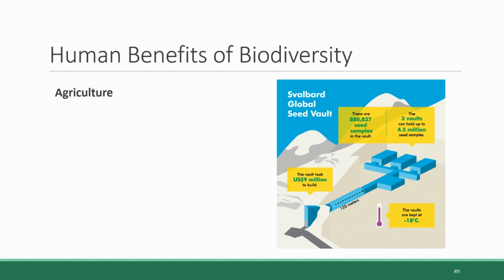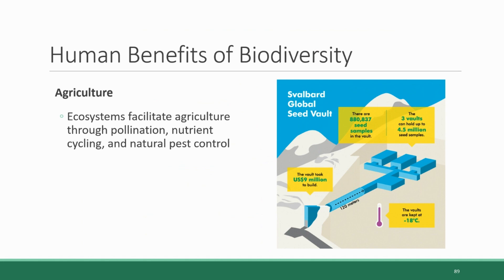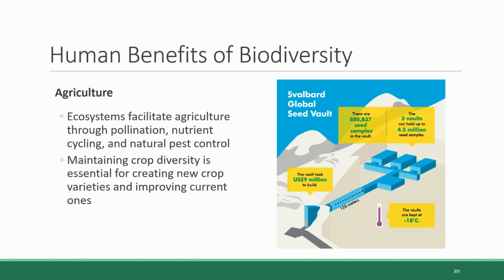Another benefit we derive from biodiversity is agriculture. While our agriculture may be an artificial, man-made endeavor, it's facilitated and supported by wild ecosystems that supply pollinators, cycle nutrients in the soil, and provide sources of natural pest control. Without these elements of the broader ecosystem, agriculture would not be possible. Additionally, as the climate changes and farmers face new challenges in raising crops under different conditions, it's important to maintain crop diversity so that there are available opportunities to develop new crop varieties or improve current ones through genetic modification. Seed banks have for many years been attempting to preserve that diversity by collecting and storing seeds. The Svalbard Global Seed Vault is the largest example — located in the northern part of Norway above the Arctic Circle, where it is cold enough for the seeds to remain dormant and preserved. The vaults have enough space to store 4.5 million seed samples, although they are nowhere near that full yet.